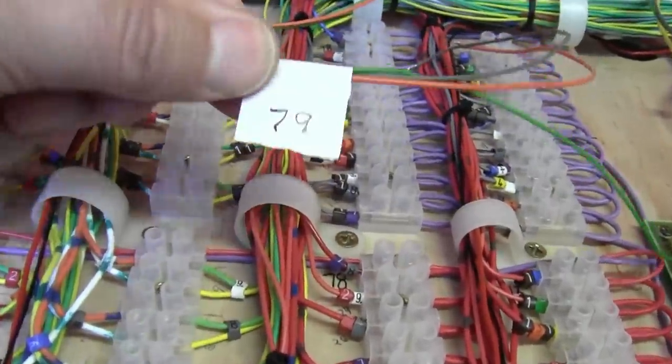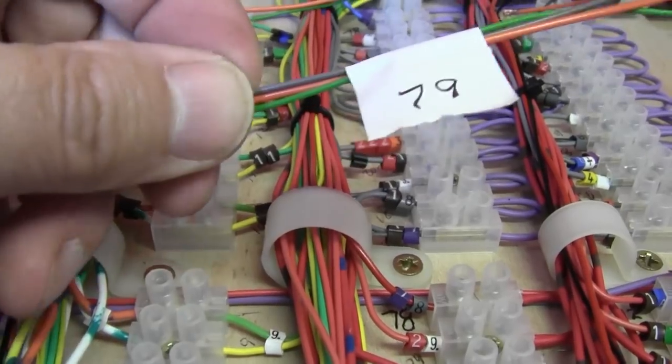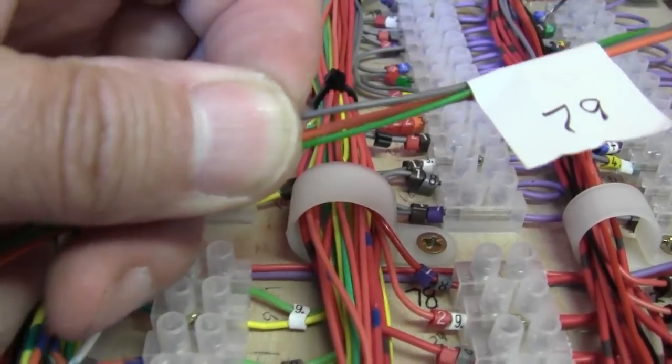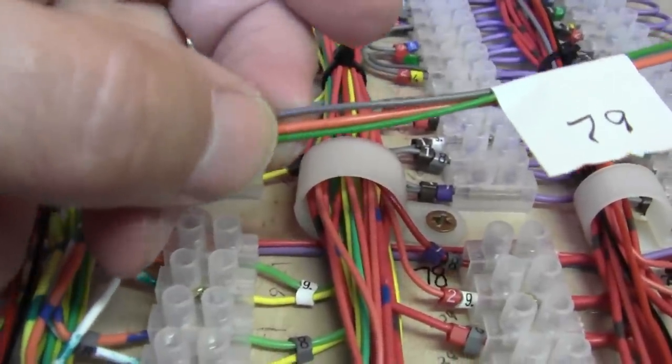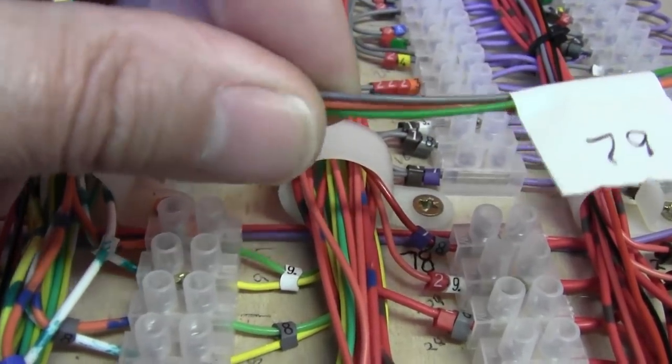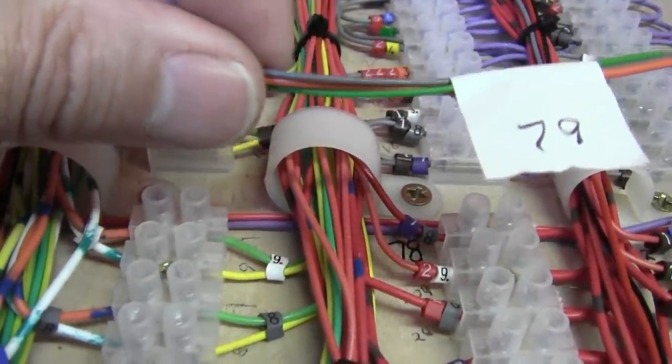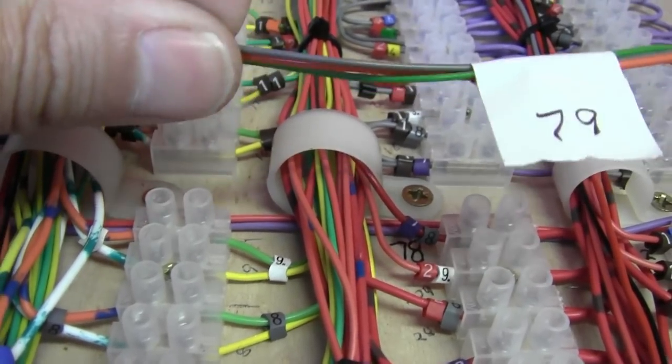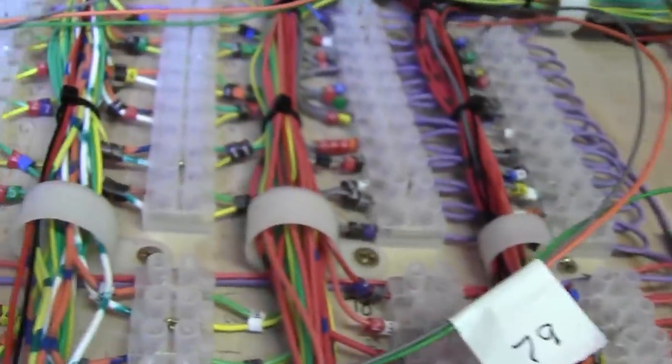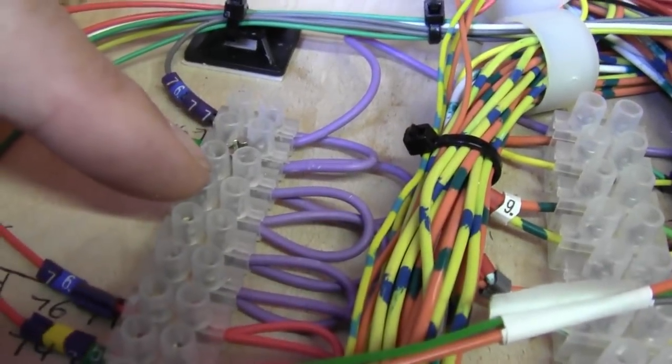So as we've just fitted point 79 earlier in the video, we shall look at the cables for 79. So we have our common return, which is the gray, and the two switch wires, green and orange. Now it should have been a yellow, but I've run out of yellow, so I've decided to use an orange. But I've marked it down in the book as a switch wire. For future reference, if anything goes wrong with that point, I know that the orange is one of the switch wires as long as I've made a note of it.